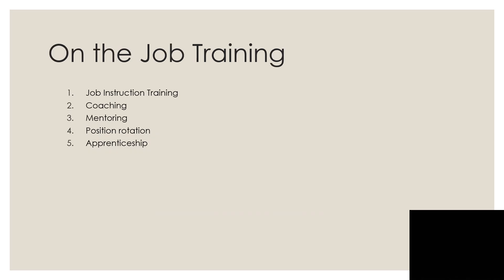The first on-the-job training method is job instruction training. It is basically used to teach workers how to do their current job effectively and efficiently. The trainee receives an overview of the job, its purposes, and desired outcomes. The trainer then demonstrates the job to give the employee the right way of doing it. The trainee is asked to copy the trainer's demonstration, and this is repeated until the trainee masters the job. Finally, the employee does the job independently without supervision.